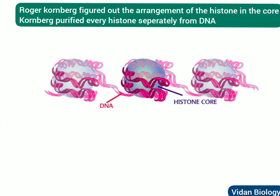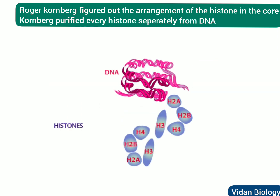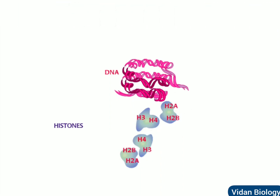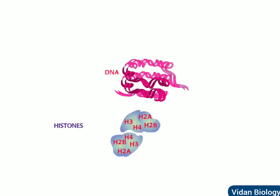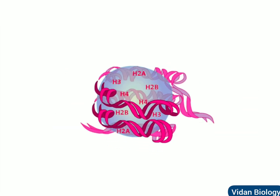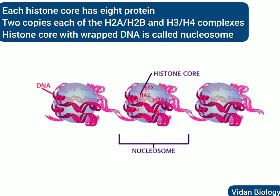Roger Kornberg did experiments that confirmed this model and also figured out the arrangement of histones in the core. He found that H2A and H2B tend to stick together, as do H3 and H4. When the H2A-H2B complex was mixed with the H3-H4 complex and naked DNA was added, he got the same X-ray pattern as for chromatin. More analysis revealed that each histone core has eight proteins — two copies each of H2A, H2B, H3, and H4. This histone core with wrapped DNA is called a nucleosome.